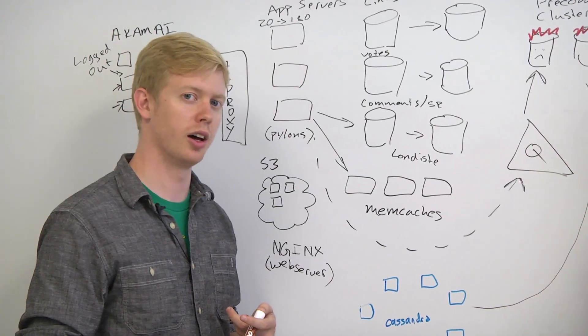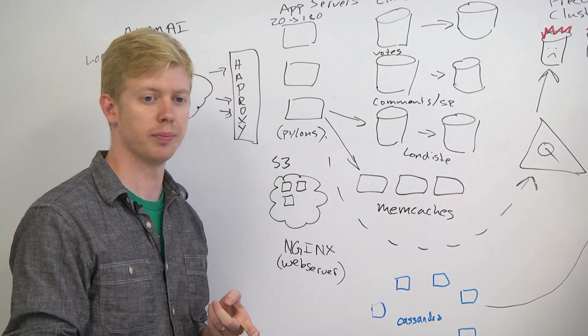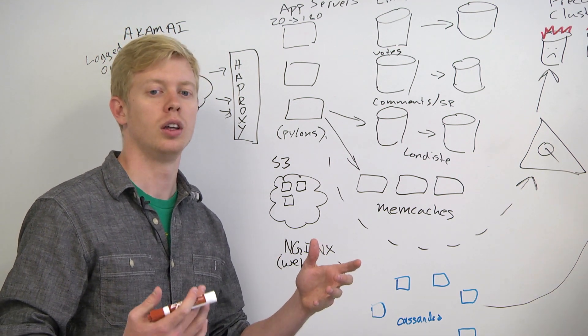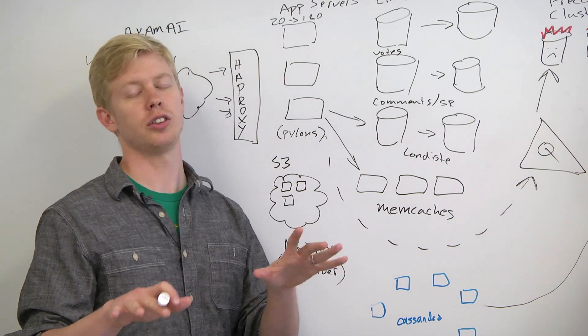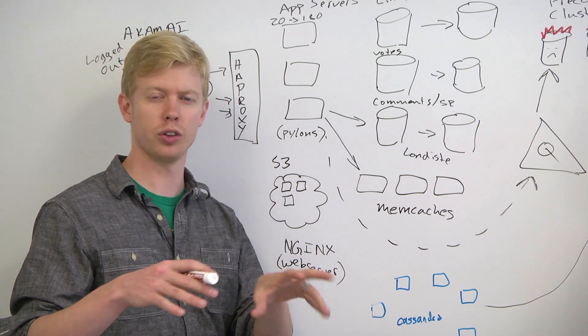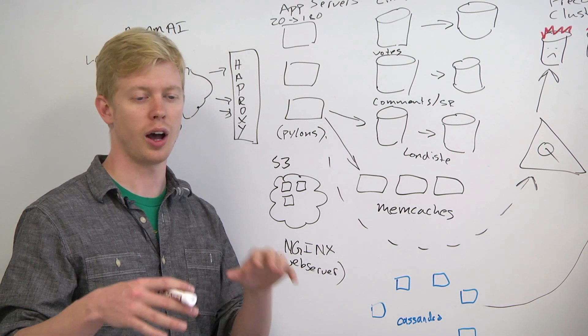So we talked a little bit in the office hours for Unit 4. Somebody had asked about in Datastore, if two users try to register the same username at the same time, and Datastore doesn't enforce any uniqueness constraints on a field in a database, how do you manage that?